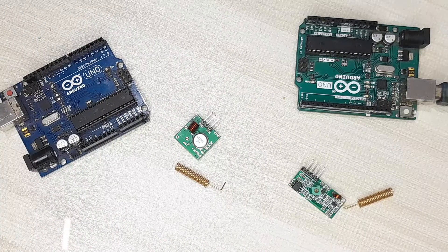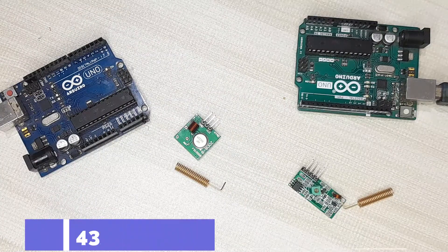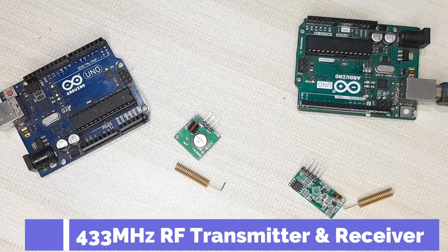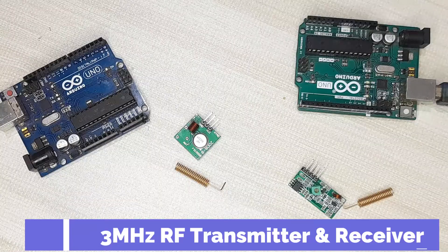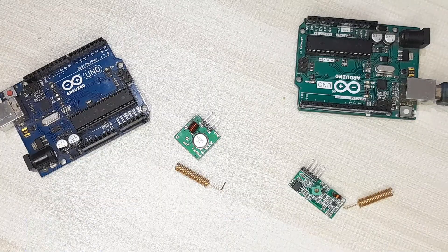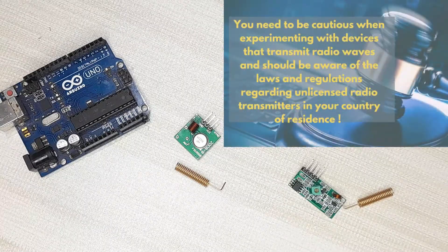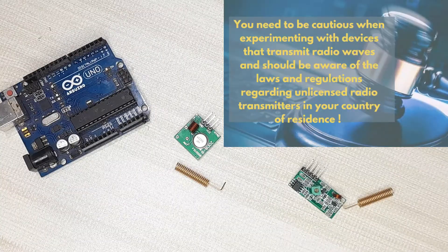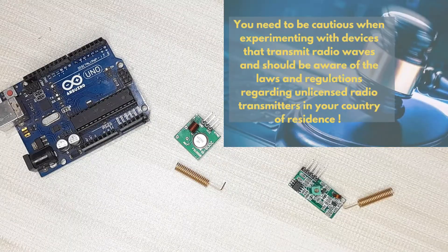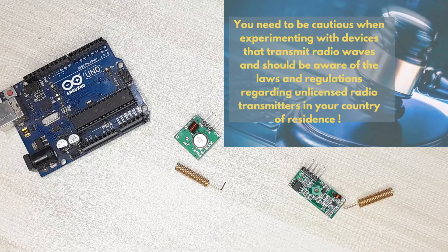Hello everyone, today I'm going to talk about the 433 MHz radio frequency transmitter and receiver modules and how to use them with Arduino. These are cheap wireless modules providing one-way communication using the amplitude shift keying technique. Before using these RF devices, you should always be aware of the laws and regulations regarding use of unlicensed radio frequency transmitters in your country. These 433 MHz modules are legal to use in many countries as long as they are operated at low power and don't transmit continuously.